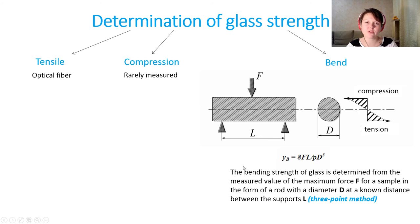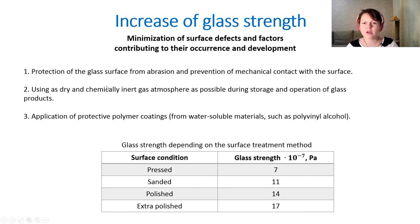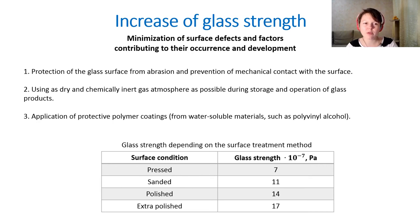To increase glass strength, we should minimize surface defects and factors contributing to their occurrence and development. Three methods are used: first, protecting the glass surface from abrasion and mechanical contact; second, using as dry and chemically inert an atmosphere as possible during storage and operation; and third, using protective polymer coatings.